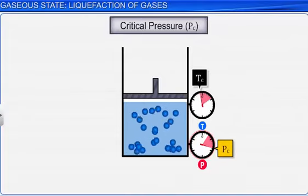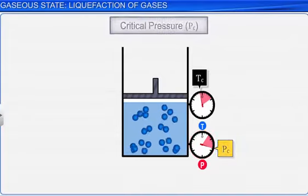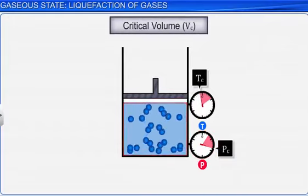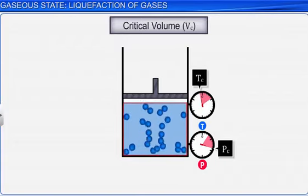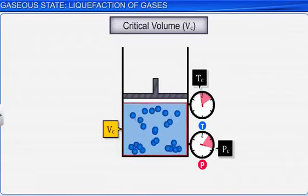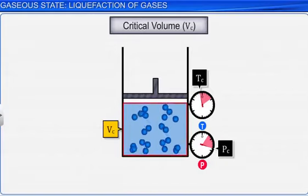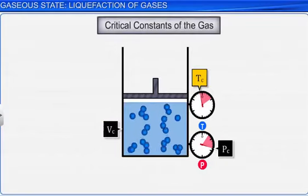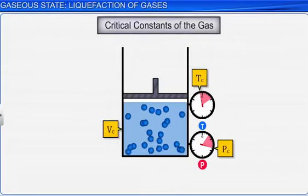The volume occupied by one mole of a gas, at its critical pressure, and at critical temperature, is the critical volume, Vc, of the gas. Tc, Pc, and Vc are collectively called the critical constants of the gas.